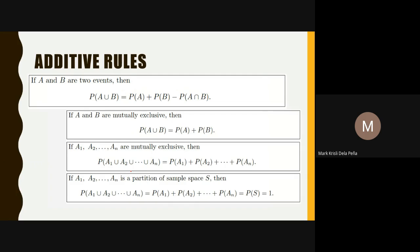If A and B are two events and they are mutually exclusive — meaning they don't have an intersection — then their probability is just equal to the sum of those probabilities. In a Venn diagram, mutually exclusive events A and B don't have common outcomes or common values.